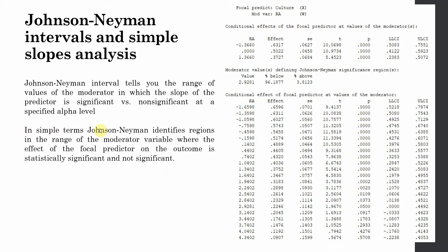In simple terms, the Johnson-Neyman method identifies regions in the range of the moderator variable where the effect of the focal predictor (culture) on the outcome (organizational performance) is statistically significant versus not significant. Your impact of culture on organizational performance is moderated up until role ambiguity reaches 2.9281. If you further increase it beyond 2.92, the effect is no longer moderated.